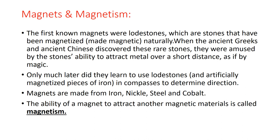Magnets are such materials that attract other magnetic materials. Magnets attract only four metals: iron, nickel, steel, and cobalt. Magnets are made from iron, steel, nickel, and cobalt, and these are the only four metals which can be attracted by a magnet. Except these four metals, no material is attracted towards a magnet.